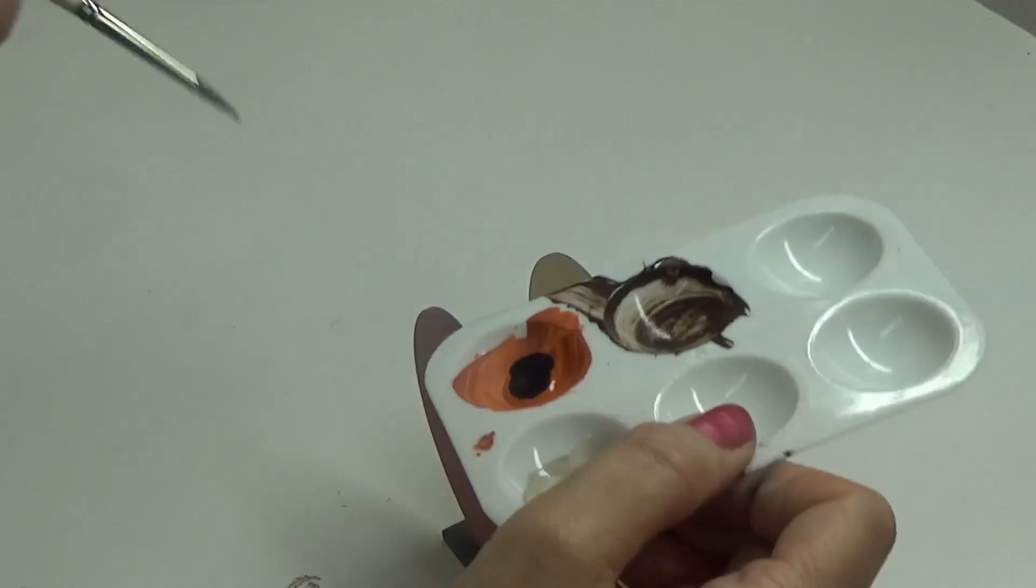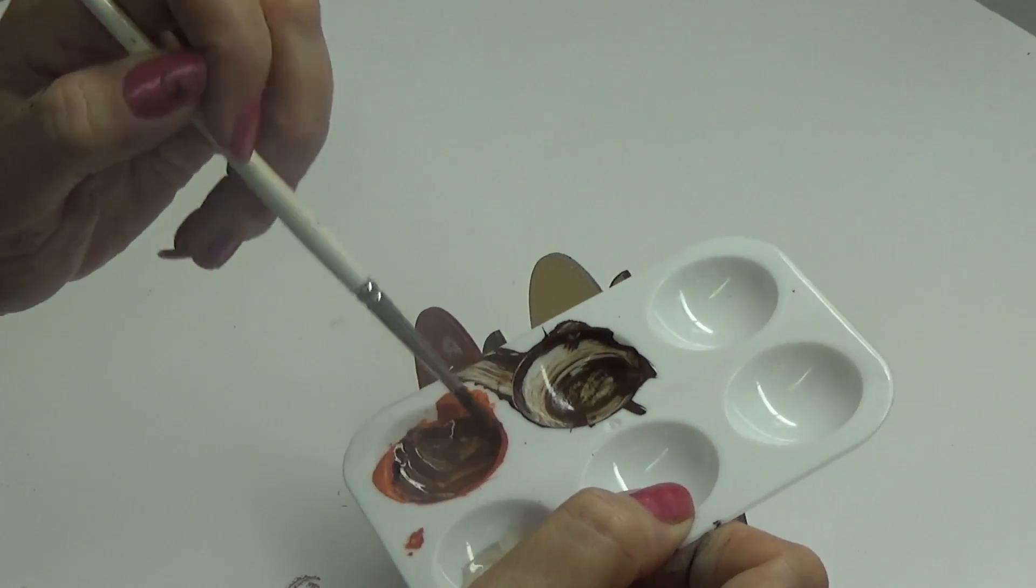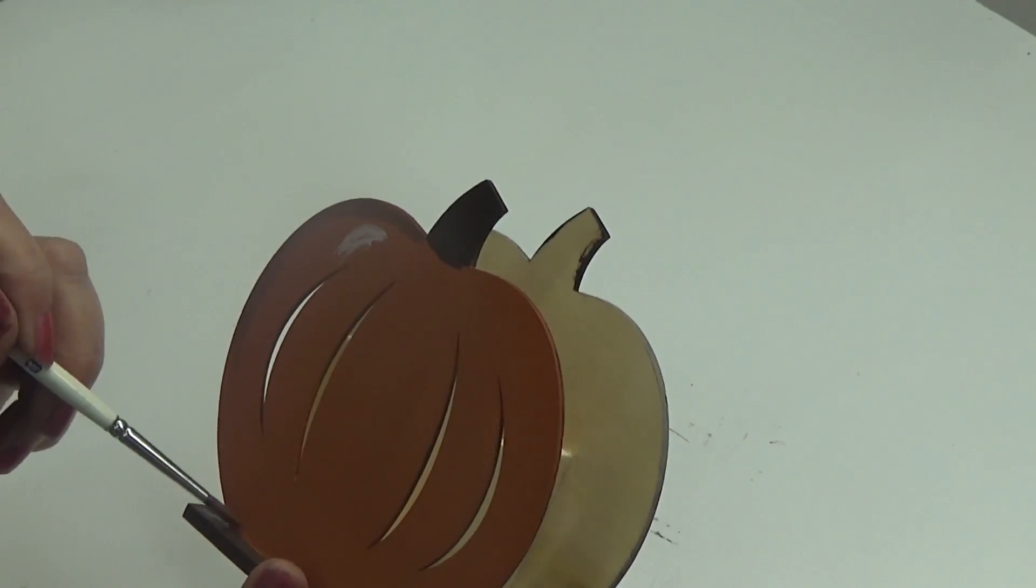Now I'm mixing up a darker orange to do the edges in and my detailing. This one has the cutout so I don't have to put those lines in there like I did on the other side.